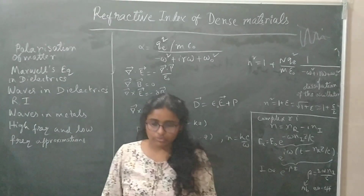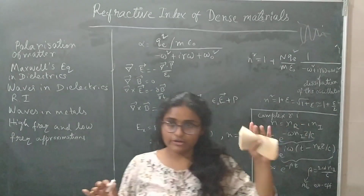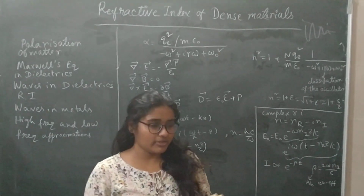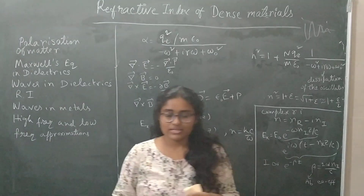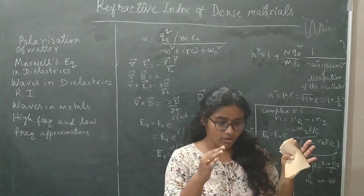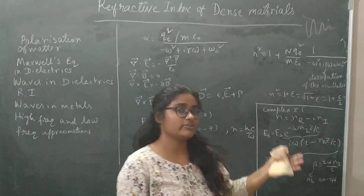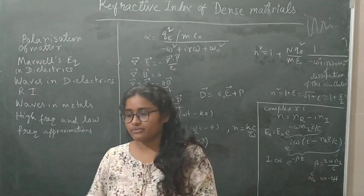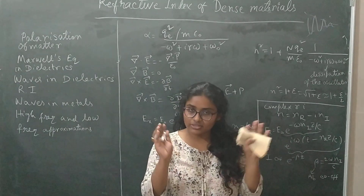Generally, refractive index — what do you understand? This is the ratio between the velocity of light and the velocity in that matter. Whenever in an interview the teacher asks what do you mean by refractive index, if you just tell that it is the amount of bending of light when going from free space inside a material, they will tell you no, this is not the right answer.